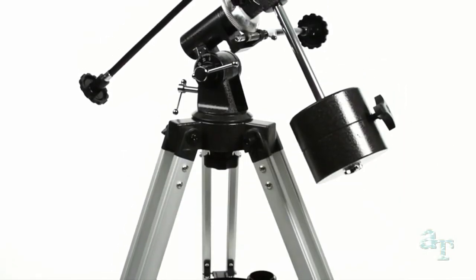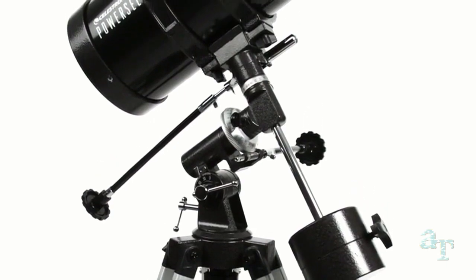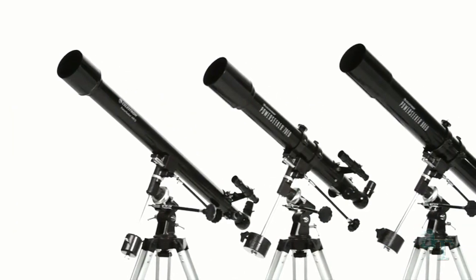The equatorial mount is a favorite of amateur astronomers because it makes it easier to track objects as they appear to move across the night sky. Choose the optical tube that's right for you,